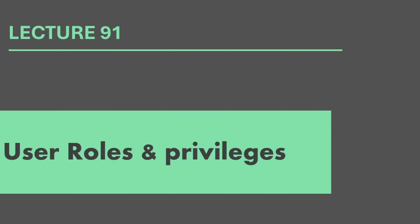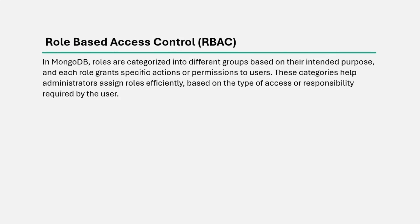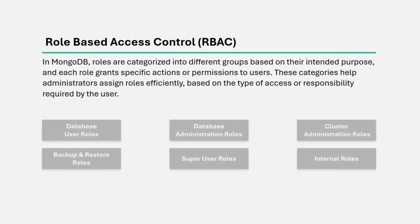As we learned in the last lecture, in MongoDB, a user has role-based access. That means a user can perform only those tasks on the server which his assigned role allows him to do. Roles are categorized into different groups based on their intended purpose, and each role grants specific actions or permissions to users. These categories help administrators assign roles efficiently based on the type of access or responsibility required. We can categorize role-based access into six types.